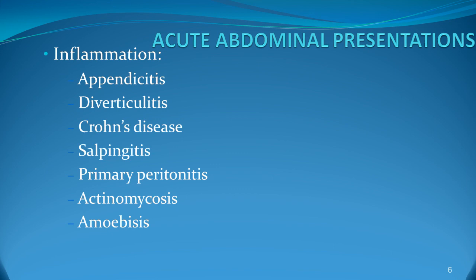The common presentations are appendicitis, presenting with pain in the right iliac fossa. The pain starts in the umbilicus and shifts to the right iliac fossa. Diverticulitis presents in old age patients with pain in the left iliac fossa. Crohn's disease has a prolonged history with recurrent admissions. Salpingitis typically presents in females of childbearing age and can have signs of PID.